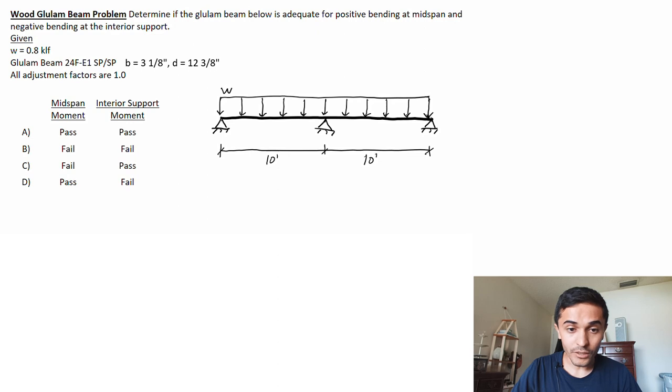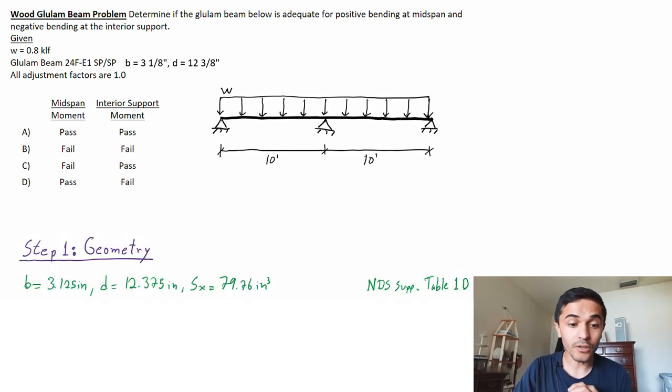So we see that this is a two bay continuous beam with a uniform load and we're gonna divide this into three steps. The first step will be to get our beam geometry. I'm not going to go to NDS for this but you can go to table 1D and get the width, the depth, and also the section modulus.